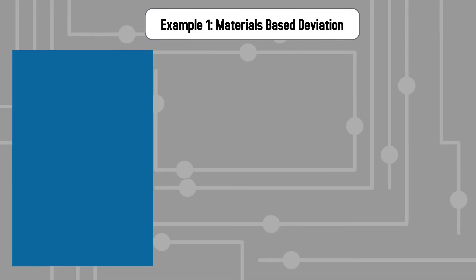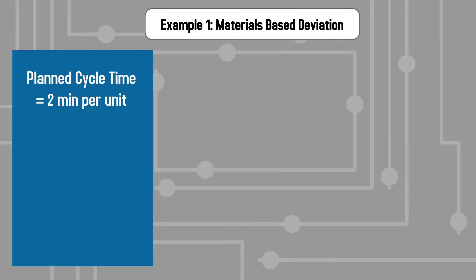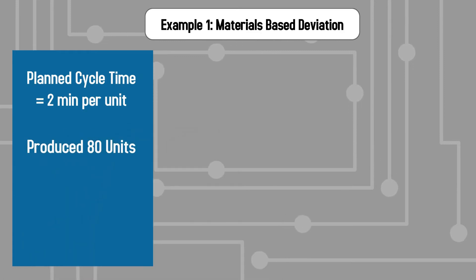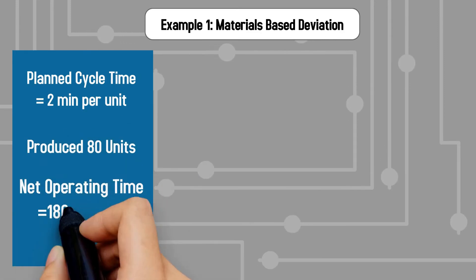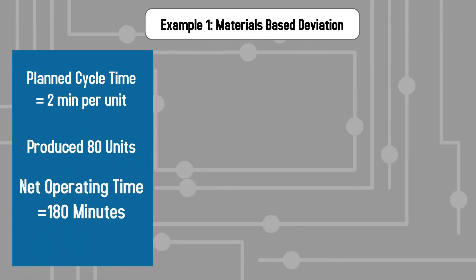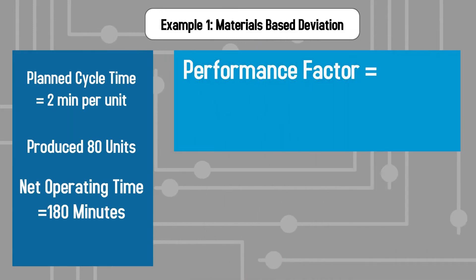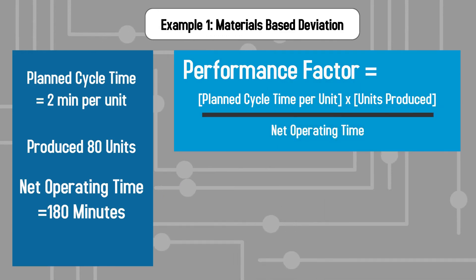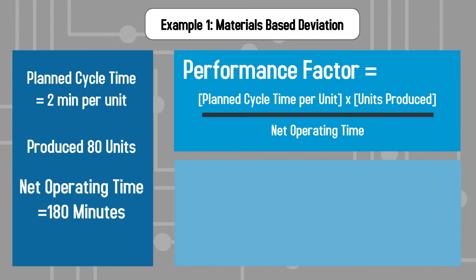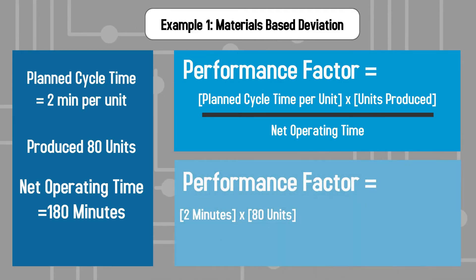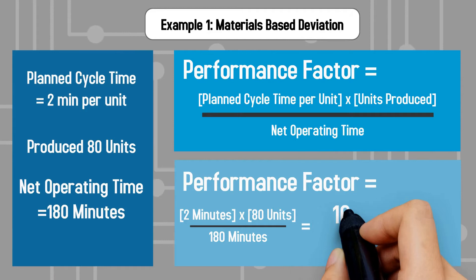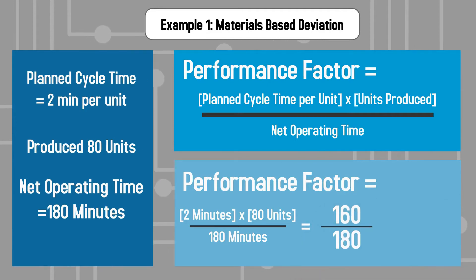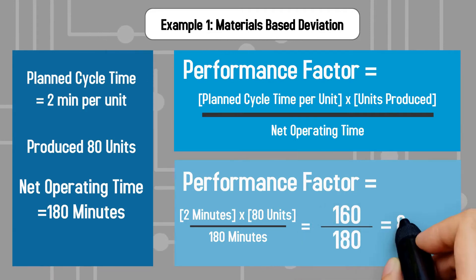For this example, let's assume the planned cycle time per unit is 2 minutes. The operator produces 80 units with a net operating time of 180 minutes. Remember, the performance factor is calculated as planned cycle time per unit multiplied by units produced, divided by net operating time. Now we plug in the given data to the basic formula.